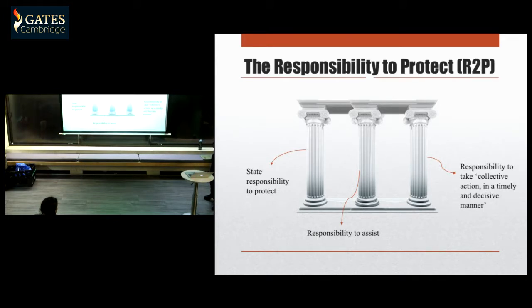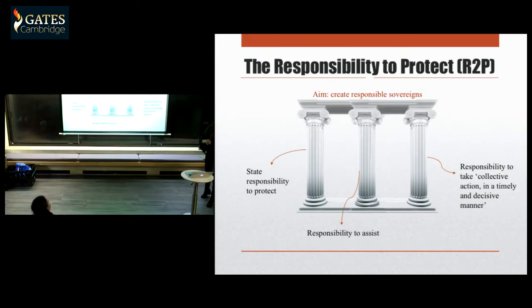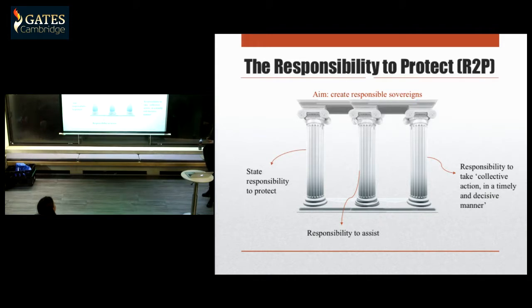This collective action comes in forms such as economic sanctions or military interventions like we have seen in Libya. What I'm trying to argue is that the bigger aim of the responsibility to protect is to re-conceptualize sovereignty — to move away from negative conceptions of sovereignty as non-intervention, and to emphasize the positive aspect: the government taking action to ensure its population is protected. The goal is to create responsible sovereigns that are both willing and able to protect their populations.